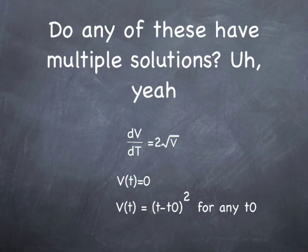So do any of these things have multiple solutions? Yeah. So suppose we have, for f, we use two times the square root of v. So dv/dt equals two times the square root of v. This equation, this first order differential equation has two different solutions. It has a solution where V(t) equals zero for all time. And then it has another solution, a whole family of solutions, actually, that for any time t sub zero, it just starts ramping up as n squared.